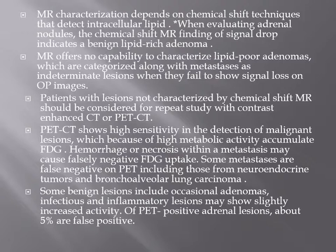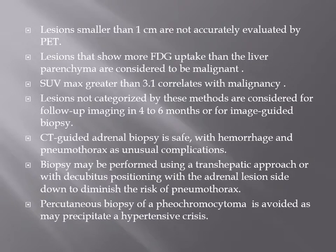Some benign lesions cause false-positive FDG uptake. Hemorrhage and necrosis cause false-negative results — if you perform PET-CT it will appear negative, but the lesion may actually be a metastasis. Other inflammatory or infectious lesions may cause high uptake, resulting in false positives in 5% of cases. Lesions larger than 1 cm are usually difficult to characterize. An SUV greater than 3.1 correlates with malignancy, and uptake should be compared with the liver — if higher, there is risk of malignancy. SUV stands for Standard Uptake Value.